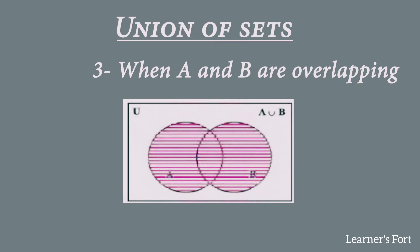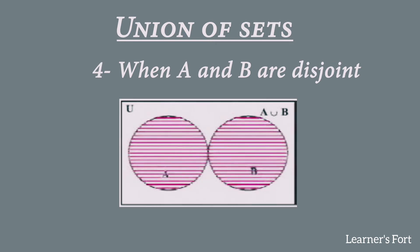The third case is when A and B are overlapping sets, meaning A and B have some elements in common but not all. The two circles overlap each other from the center. We shade both set A and set B together — excluding the universal set — to show the operation A union B.